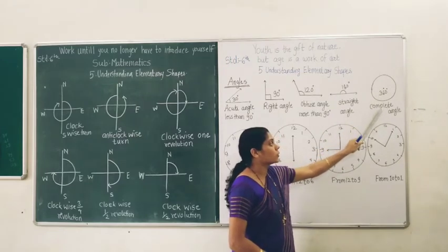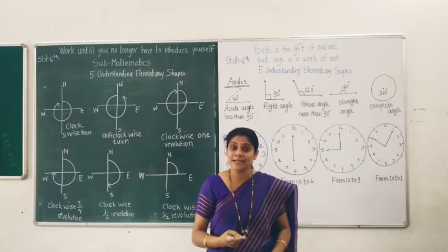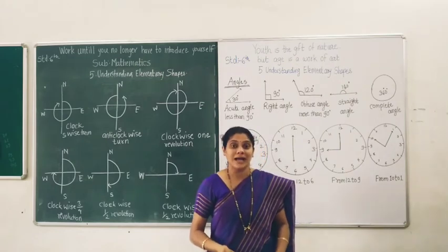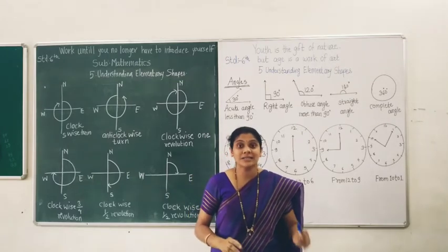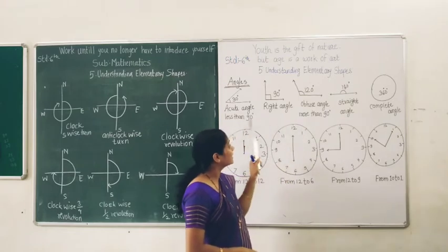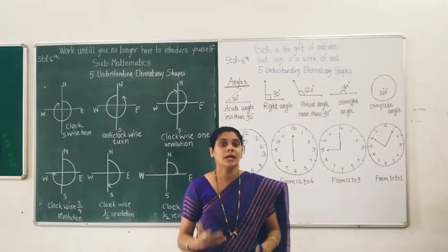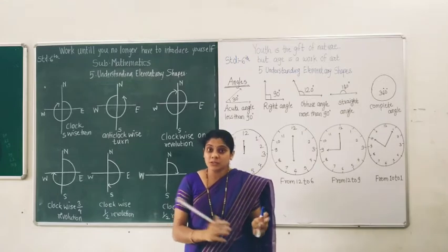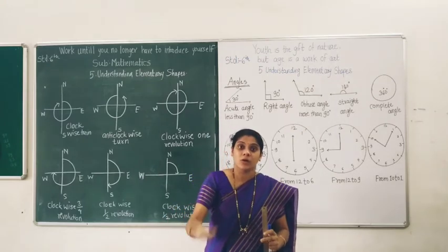So 360 degree angle is also known as a complete angle. To summarize: if given measurement is less than 90 it is an acute angle; if it is exactly 90 degree it is a right angle; if it is more than 90 degree it is an obtuse angle; if it is 180 degree it is a straight angle; and a circle having 360 degree angle is a complete angle. Now with the help of these different measurements and types of angle, we are going to study a new term in point of view of clock and direction. These two points are very important for competitive exams.